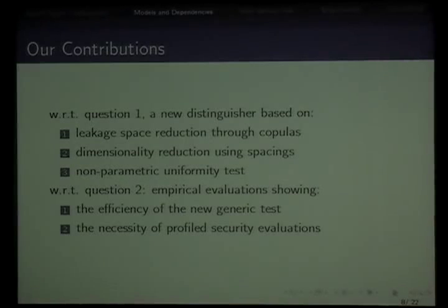Our contributions are: we propose a new distinguisher based on copulas to reduce the leakage space, simplifying the problem of modeling the leakage function. We use dimension reduction based on spacings, and in the end we apply a uniformity test which is non-parametric, so we get rid of the pesky parameters. After that, we perform empirical evaluations to show that this generic test works, is efficient, and we tried advanced scenarios showing that, at least in this case, you need profiled attacks to ensure your device is secure.